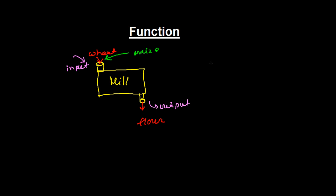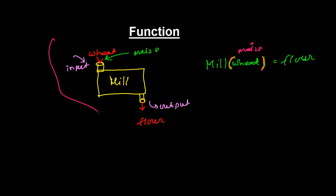If we analyze this through the eye of mathematics: putting wheat into the mill gives wheat flour, putting maize gives maize flour. The output is always flour — it may be wheat flour or maize flour — but it will be flour. This is what a function is.